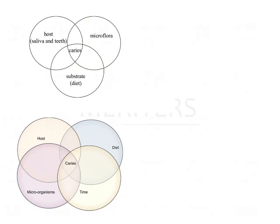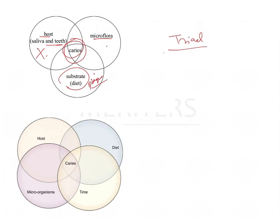Keyes first gave a triad of factors which bring about dental caries. According to him, whenever there is a host — that is the tooth — and microflora, that is the microorganisms, acting on a substrate, that is plaque or the food source, all three are required for the formation of dental caries. Even if one is absent, dental caries will not occur. This triad was later modified into a tetrad to include time as a factor, because dental caries does not occur spontaneously — it occurs over a long duration of time.